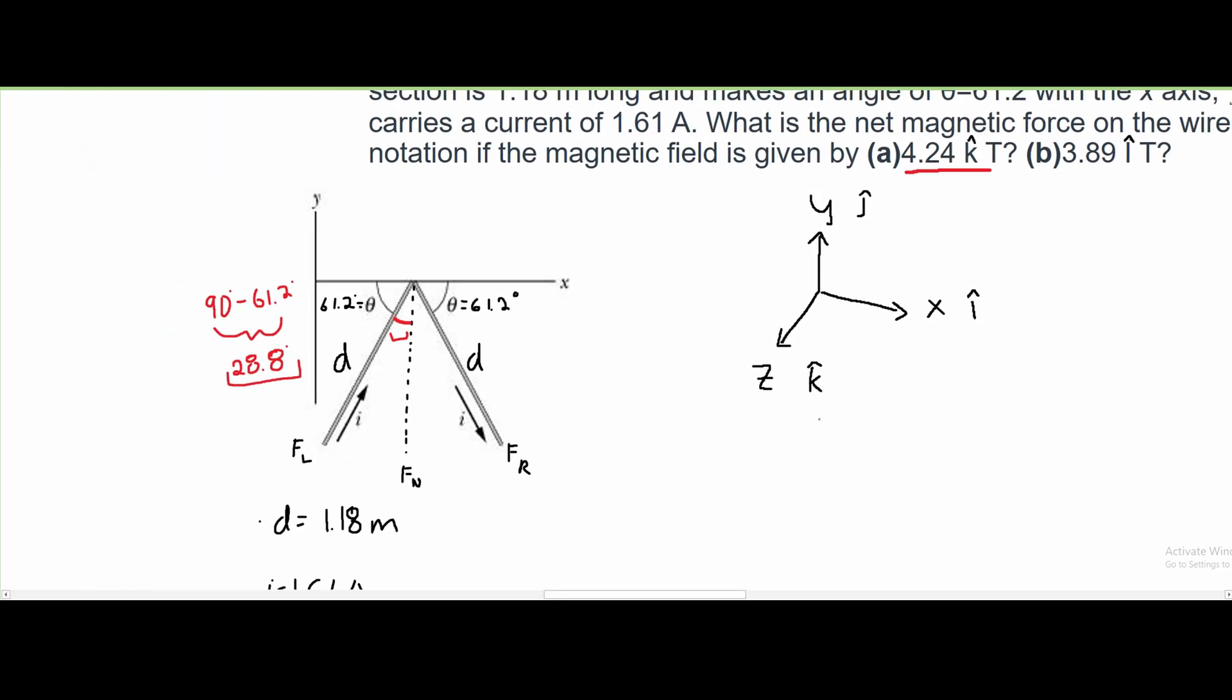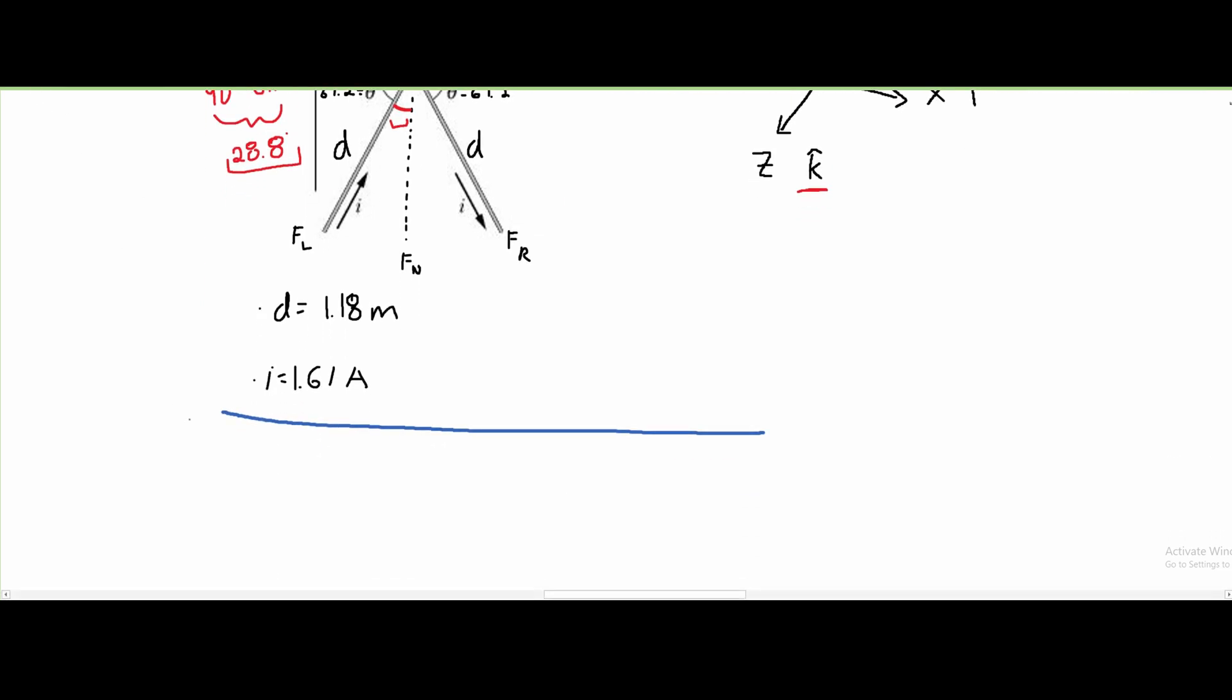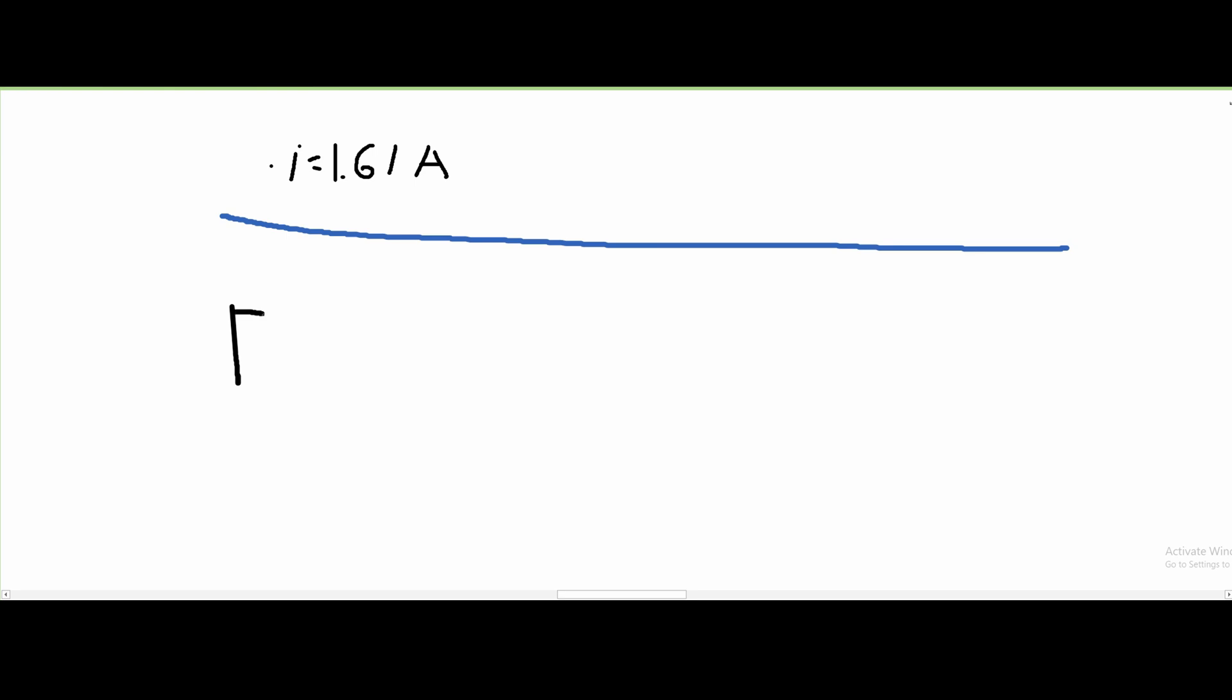We can write out this formula: F equals i times L times B times sine of theta, where i is the current, L is the length, B is the magnetic field, and theta is the angle.